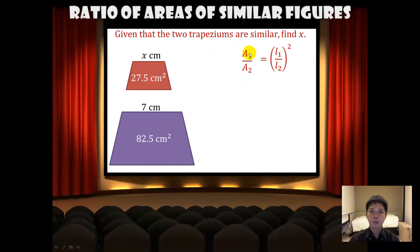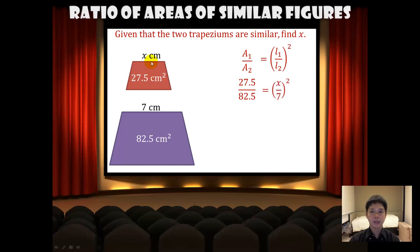A1 over A2 is simply 27.5 over 82.5. Since we started with the smaller trapezoid, L1 will equal x and L2 will equal 7. Note that these two lengths are the corresponding lengths. Simplifying, we will have 27.5 over 82.5 equals x squared over 49.